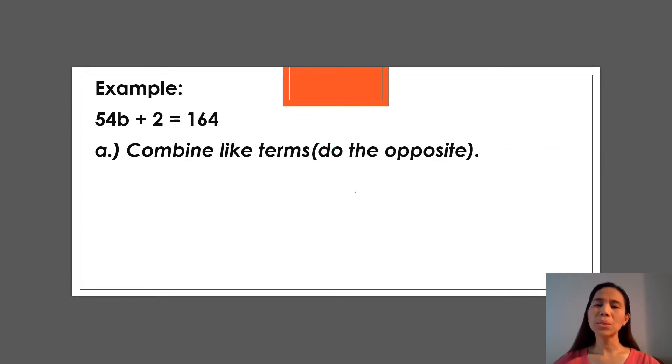So how do we do combining like terms? I put in here, do the opposite. What does this mean? Since 2 is a positive, we have to subtract 2 on the left side. Also, we have to do it on the right side as well because it is an equation. It should be equal. Whatever you do on the left side, you have to do on the right side as well.